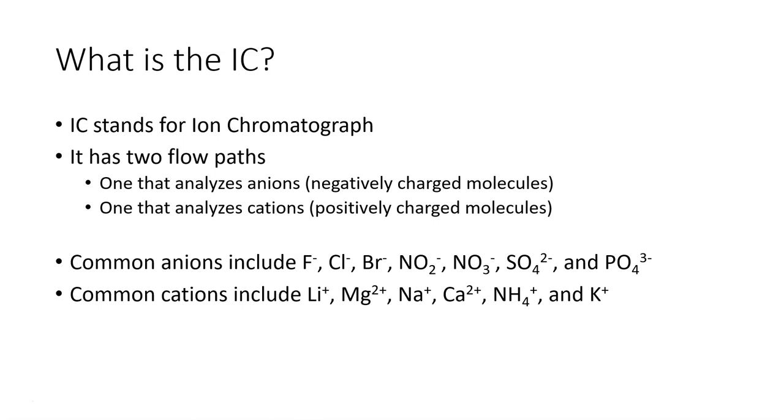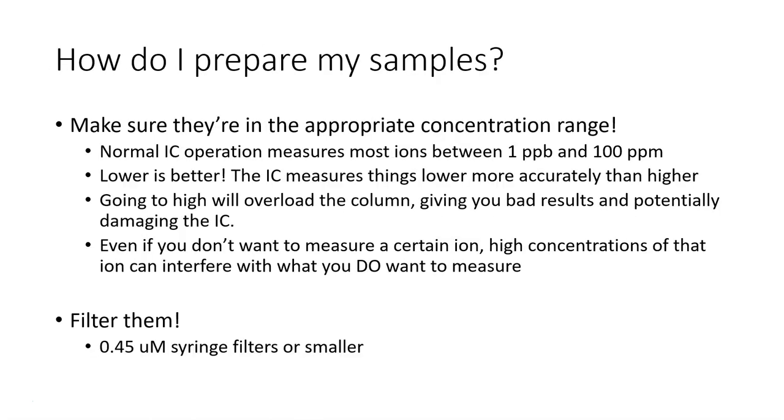The most common anions that are analyzed with the IC include fluoride, chloride, bromide, nitrite, nitrate, sulfate, and phosphate. And the most common cations that are analyzed with IC are lithium, magnesium, sodium, calcium, ammonium, and potassium. You can measure more things than just these, but these are the most common ones that you look at.